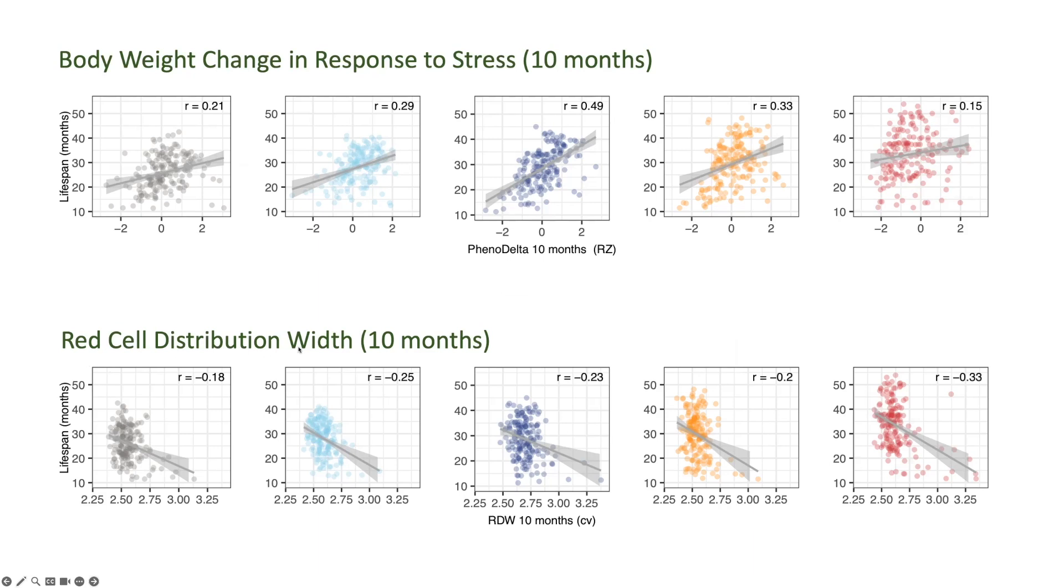It's called red cell distribution width. If you go get a whole blood analysis at the doctor, red cell distribution width, RDW expressed as coefficient of variation, is a number that's going to be on there, and it's very similar to the mouse number, and look at this.